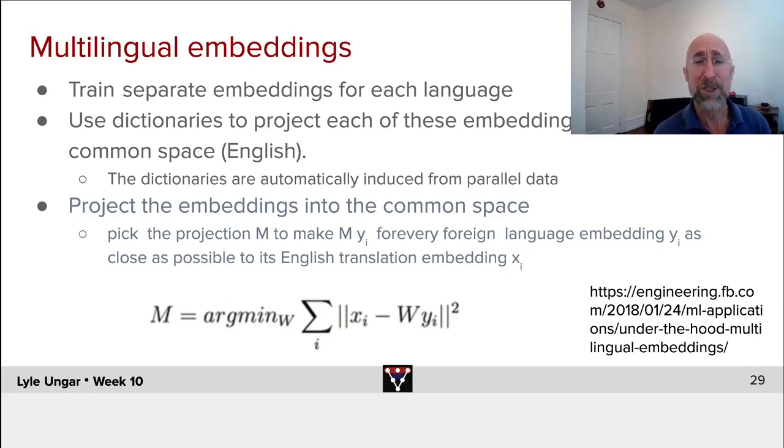If you want to be even fancier, instead of putting this as a linear projection, you could put a whole neural net in here and do a nonlinear mapping between every Chinese word and every English word.